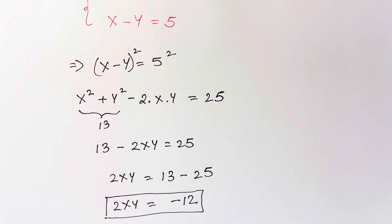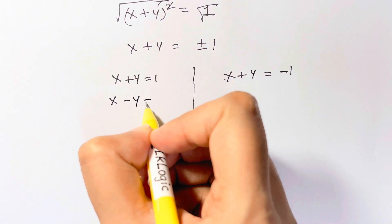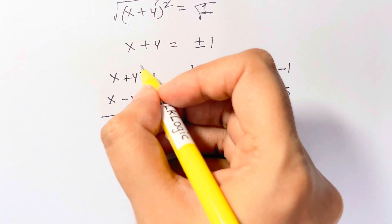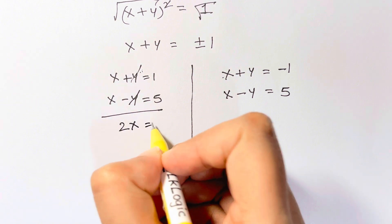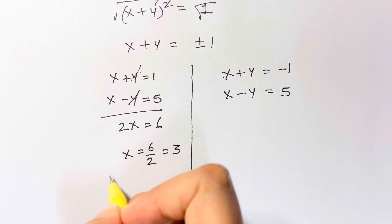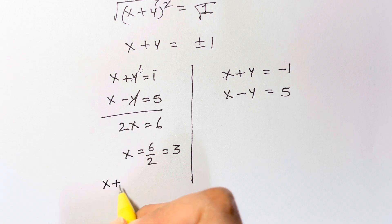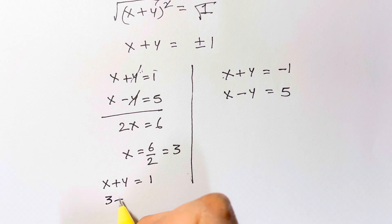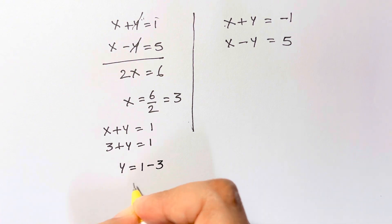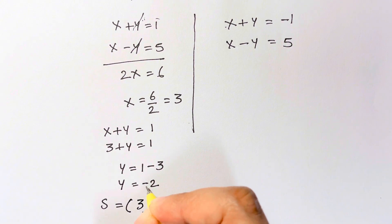Now you have this equation. Equation 2 is x minus y equals to 5. So I can solve these two equations. Add x plus y equals 1 and x minus y equals 5. Plus y and minus y get cancelled. 2x is equal to 5 plus 1, which is 6. So x is equal to 6 over 2, that's 3. Just substitute back into one of the equations: x plus y equals 1. So 3 plus y equals 1, giving y equal to 1 minus 3, that's negative 2. So your solution here is x coordinate 3 and y coordinate negative 2.